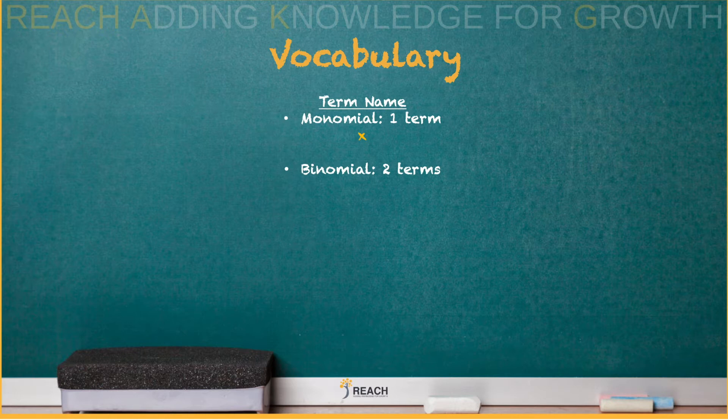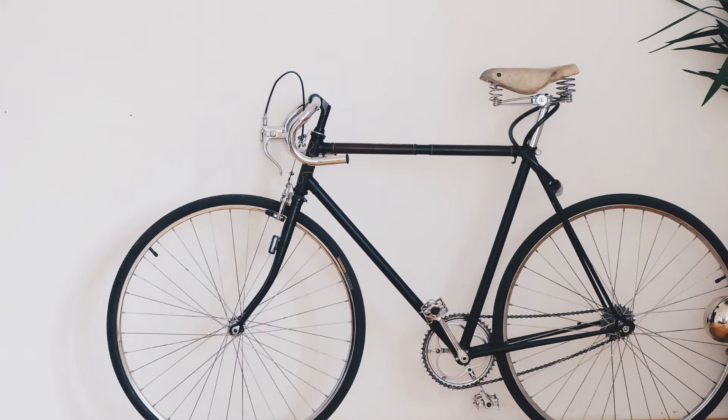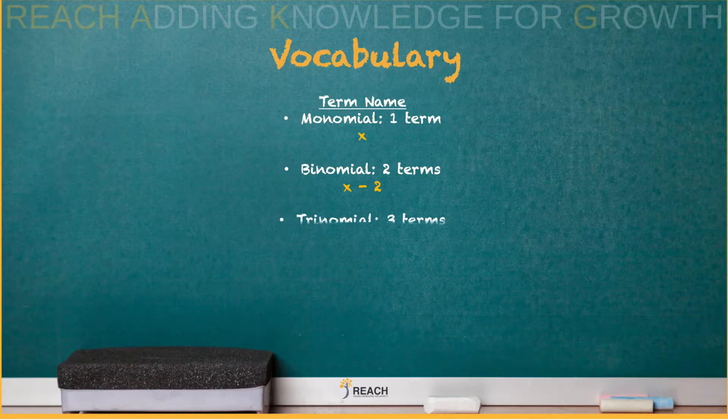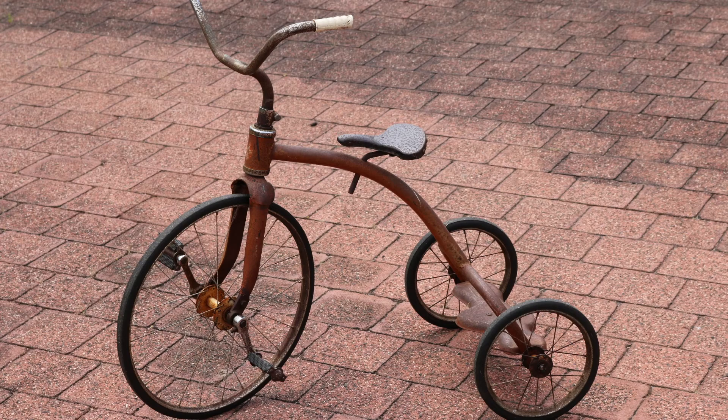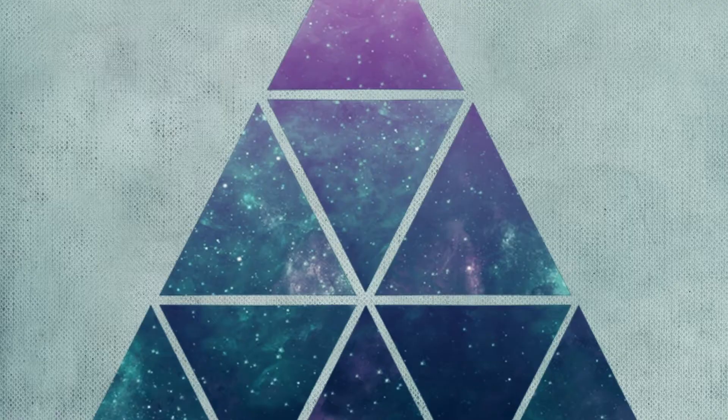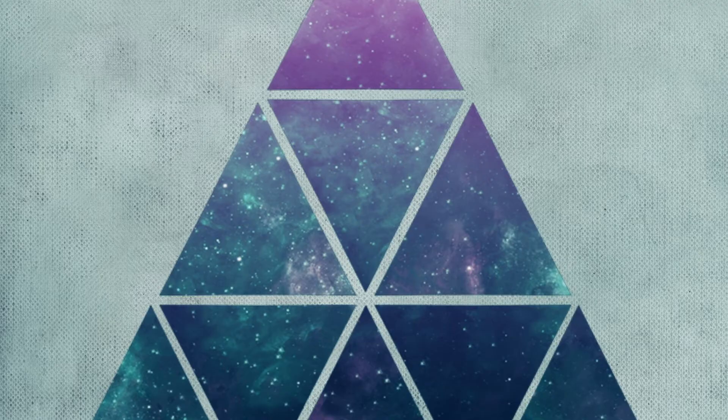Binomial, bicycle, two wheels. So binomial is two terms. That's an example. Trinomial, tricycle, triangle, that means three terms.